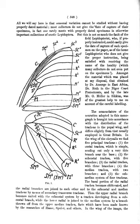Anal: pertaining to last abdominal segment which bears the anus. Anal angle: the posterior corner of the wing, same as tornus. Anal fold: a fold in the inner margin of the hindwing. Anal valves: exposed claspers at the end of the abdomen.